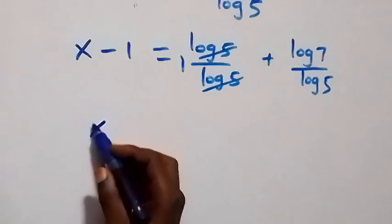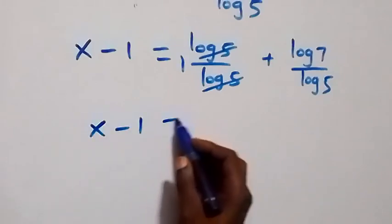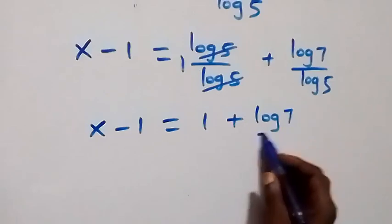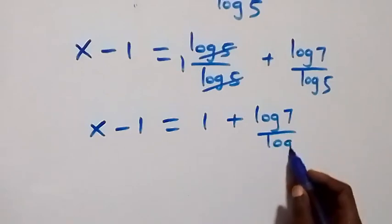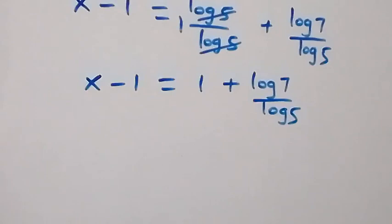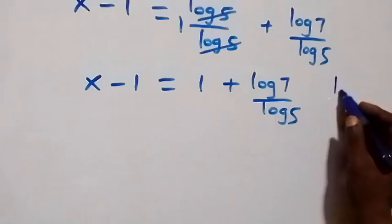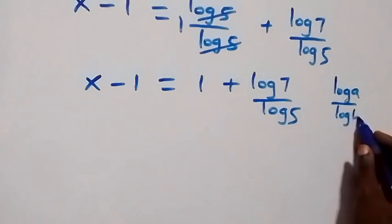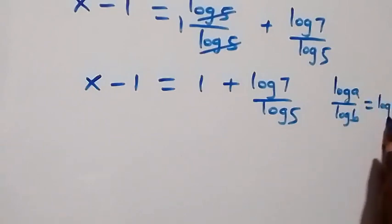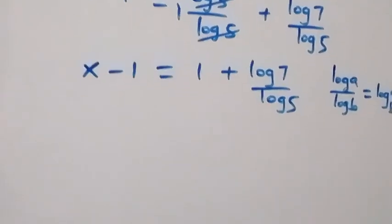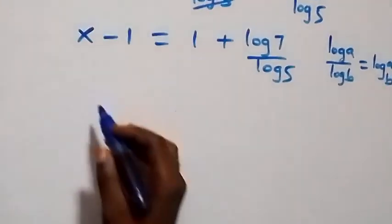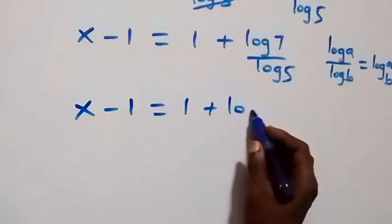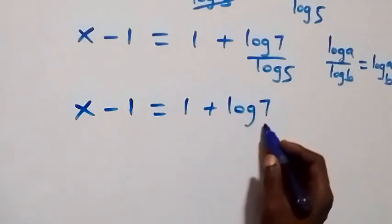So we have x minus 1 equals 1 plus log 7 over log 5. We can now apply the change of base formula: log a over log b equals log a to base b. So this becomes x minus 1 equals 1 plus log 7 to base 5.